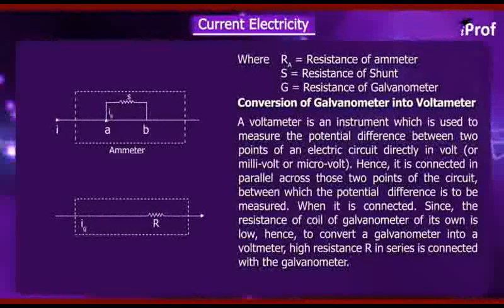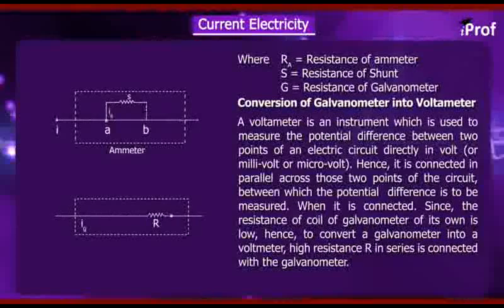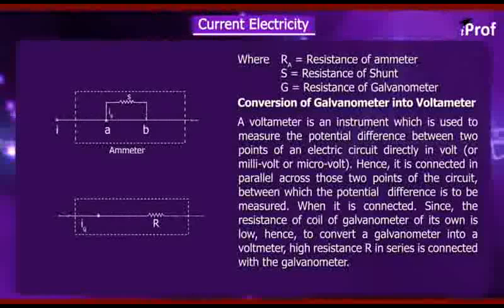Since the resistance of coil of galvanometer is low, to convert a galvanometer into a voltmeter, high resistance R in series is connected with the galvanometer.